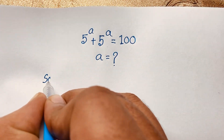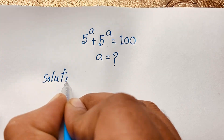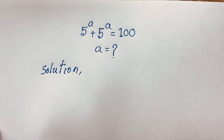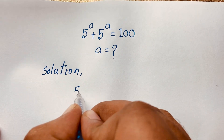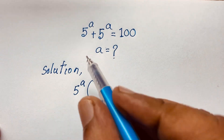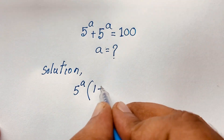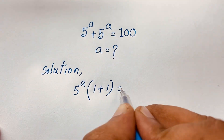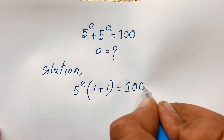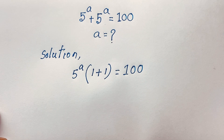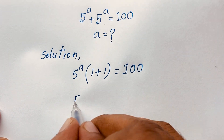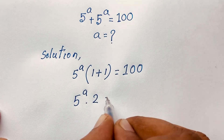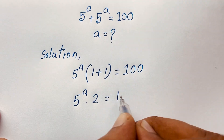Solution. First of all, if you think here is 5 to the power a, it's common. So this divide this, it will be 1, plus this divide this, it is also 1, is equal to 100. We are finding out the value of a. Now at this point, you can see here is 5 to the power a is equal to 1 plus 1, it will be 2, is equal to 100.